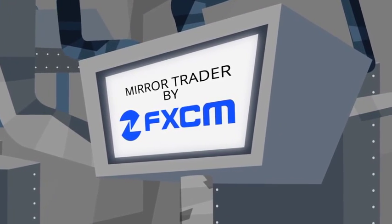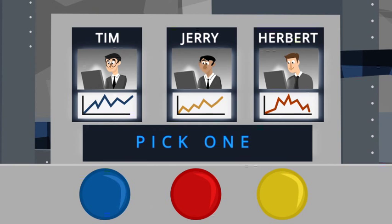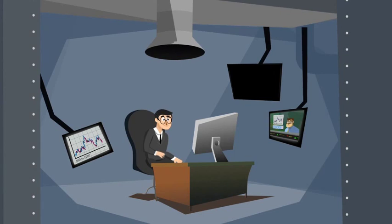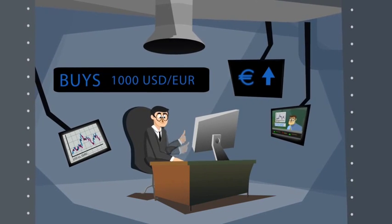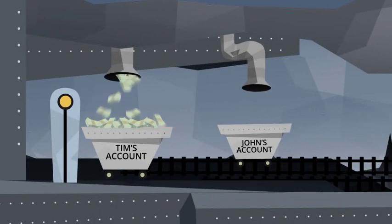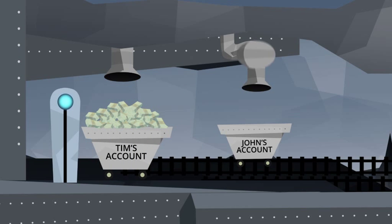That's where FxCM's Mirror Trader can help. Mirror Trader allows John to see the trading strategies of professionals in the foreign exchange market and copy the ones that he likes best. If John's trader sees the euro growing stronger than the dollar, Mirror Trader automatically triggers the same trade for John.